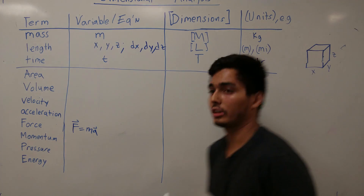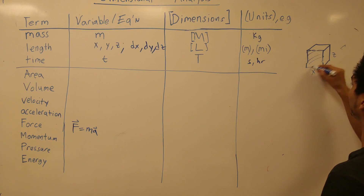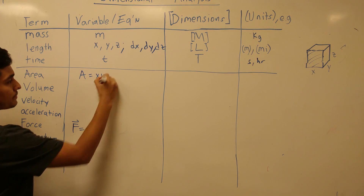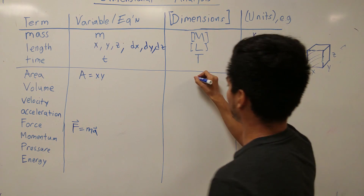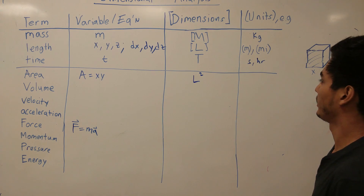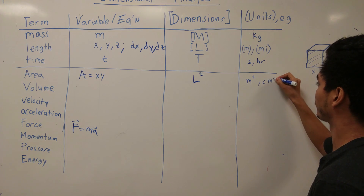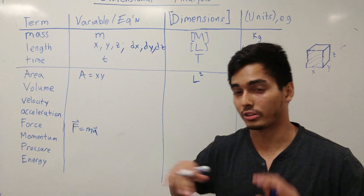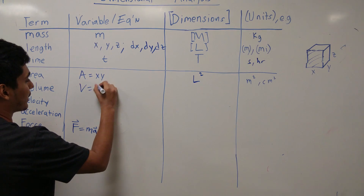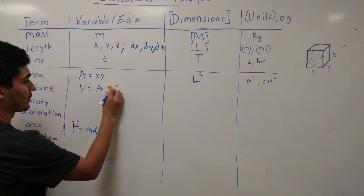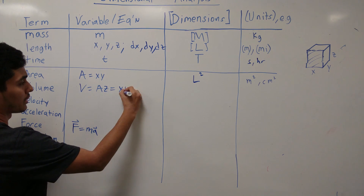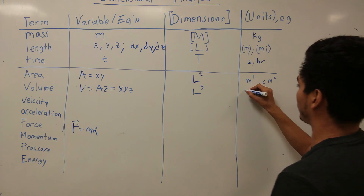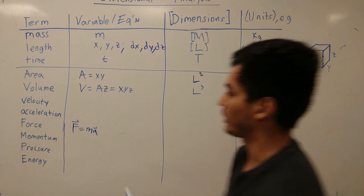Area: using the box I drew, area is a cross-section. An example equation is A = x × y, so the dimensions are length squared, with units like meters squared or centimeters squared. Note there are different types of area — surface area, cross-sectional area — which we'll differentiate later. Volume takes that area and moves it through the third dimension: V = x·y·z, giving dimensions of length cubed, with units of meters cubed.